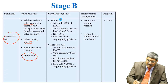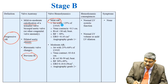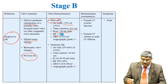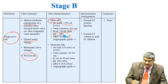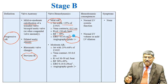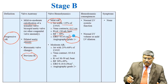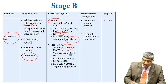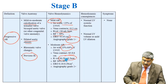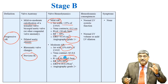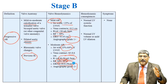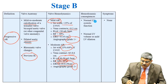Looking at Stage B valve hemodynamics, it can be mild AR with jet width less than 25%, vena contracta less than 0.3 cm, regurgitation volume less than 30 ml, regurgitant fraction less than 30%, and effective regurgitation orifice area less than 0.1 cm². Angiographically the AR grade is only 1+. Or it can be moderate AR, where jet width is 25–64%, vena contracta 0.3–0.6 cm, regurgitation volume 30–59 ml, fraction 30–50%, effective regurgitation orifice area 0.1–0.29 cm², and angiographic grade greater than 2+.